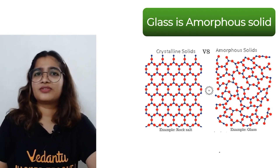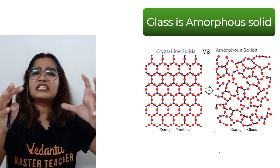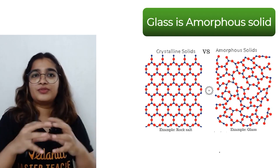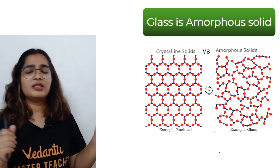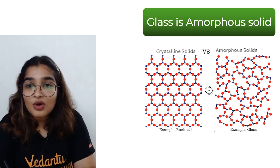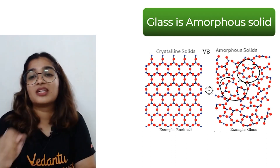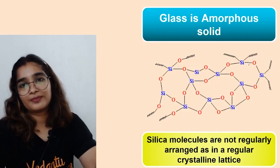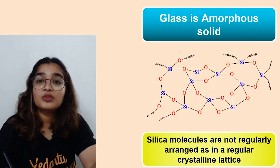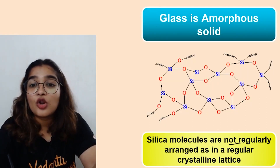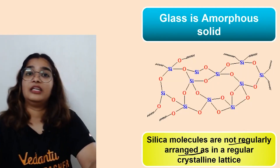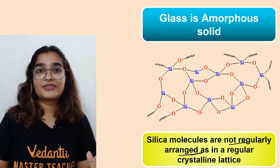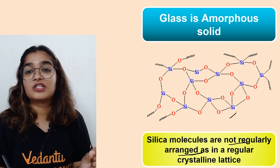Crystalline solids have a definite, well-arranged structure — the molecules, atoms, or ions are very regularly ordered. But in an amorphous solid, the arrangement is not uniform. In glass, silica molecules are not regularly arranged. The regularity found in crystalline solids is not observed in glass.